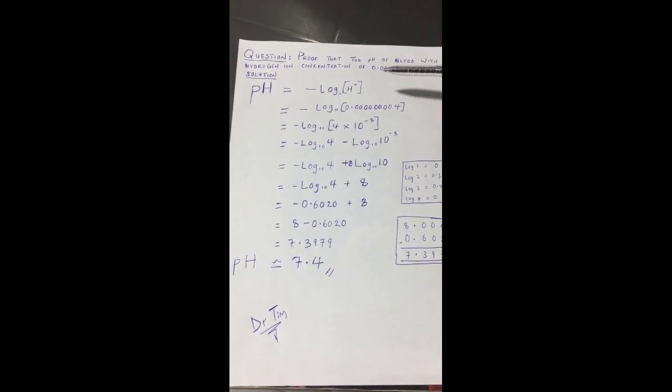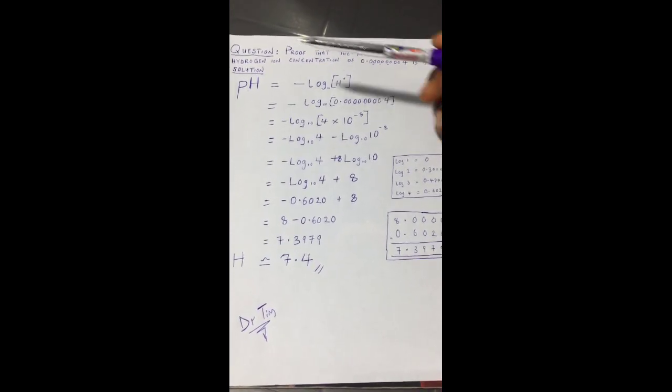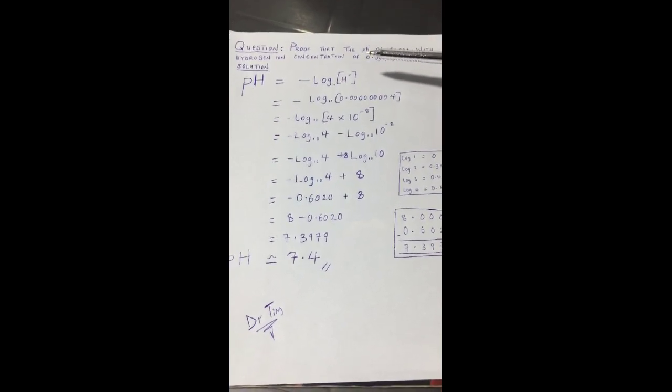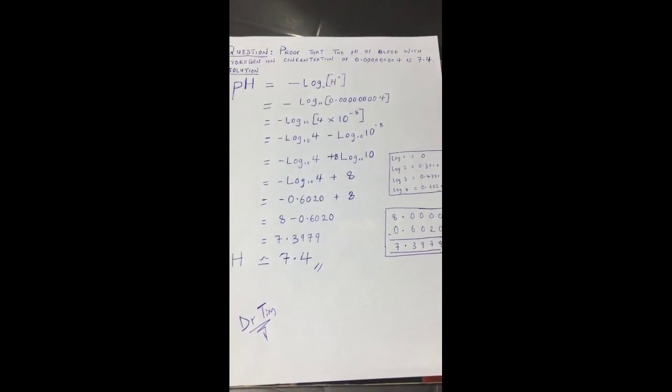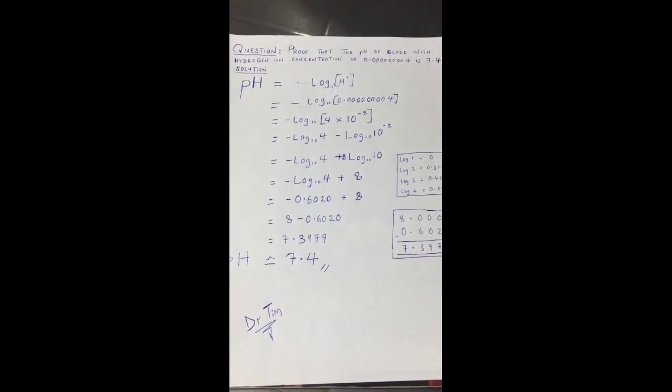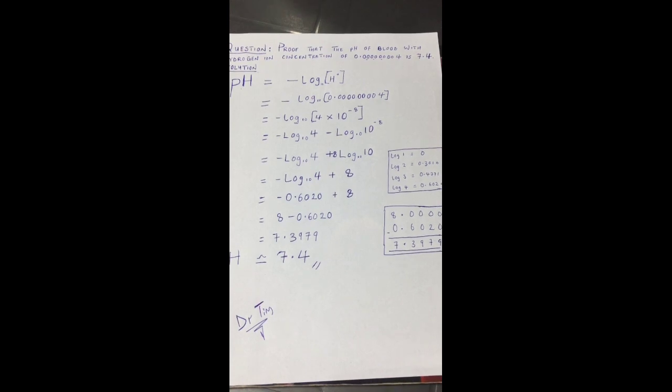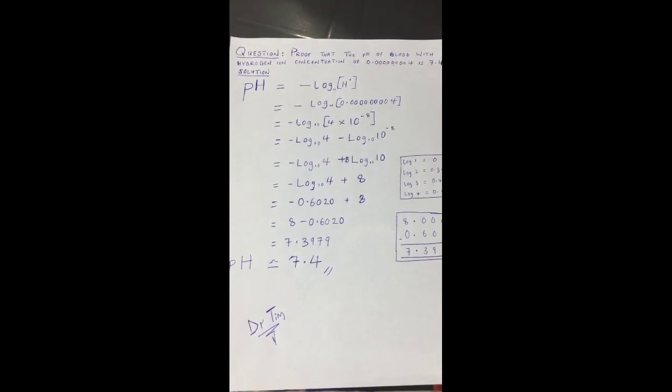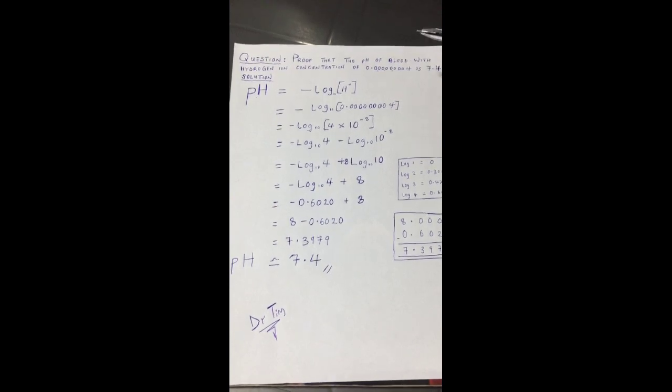Okay, it's Dr. Tim. I'll be solving a question or doing an activity. The question says prove that the pH of blood with hydrogen ion concentration of 0.00000004 is 7.4. The solution is simple.